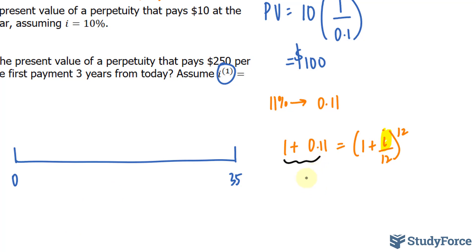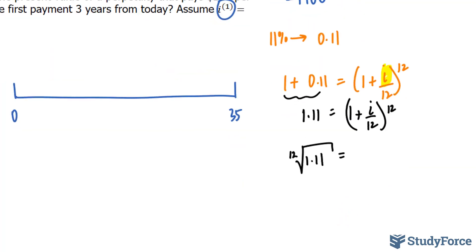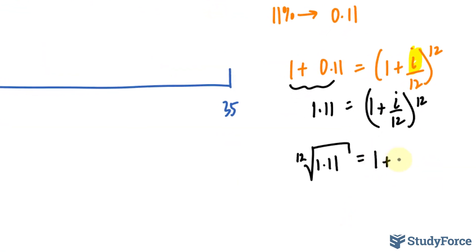To do this, we combine those first, 1.11 is the sum. And if we're looking for i, we raise both sides to the 12th root. So I have the 12th root of 1.11, and that cancels out the exponent of 12 on the right side, leaving us with 1 plus i over 12. We bring over that 1 and multiply both sides by a factor of 12, giving us the following expression.